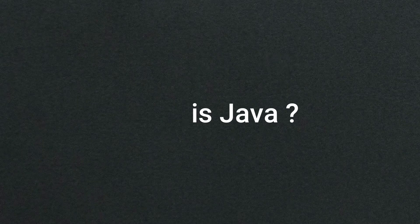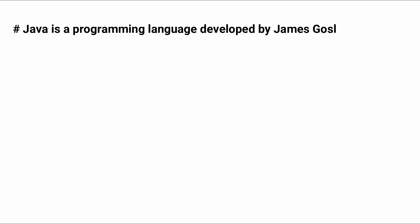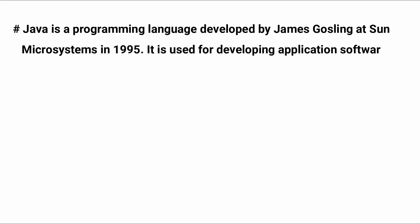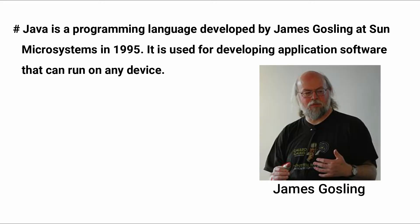What is Java? Java is a programming language developed by James Gosling at Sun Microsystems in the year 1995.